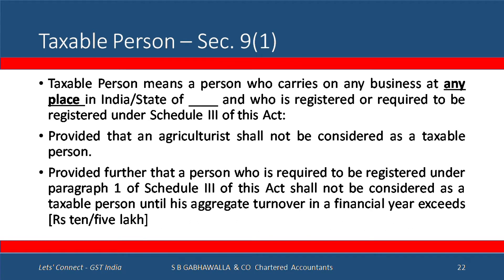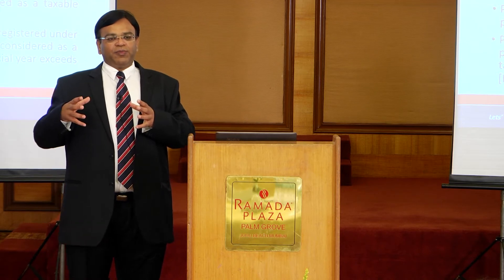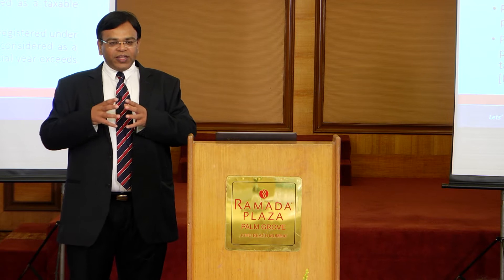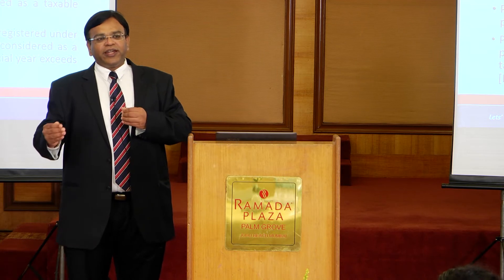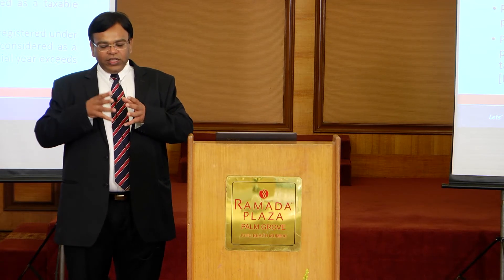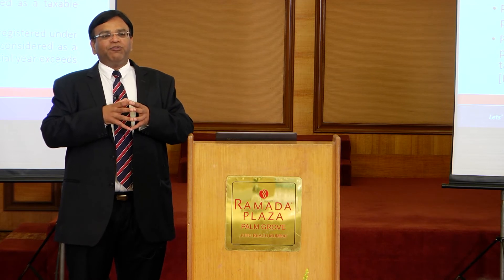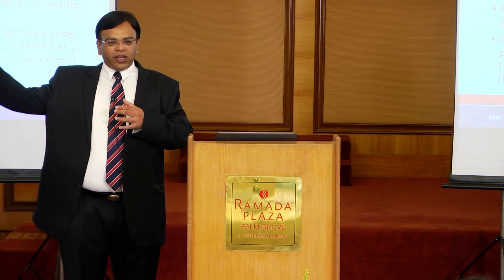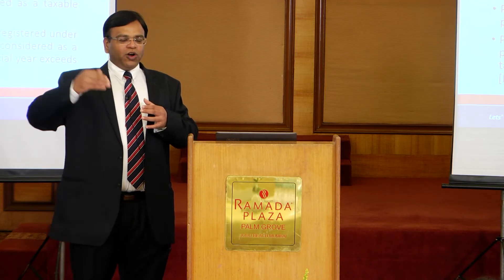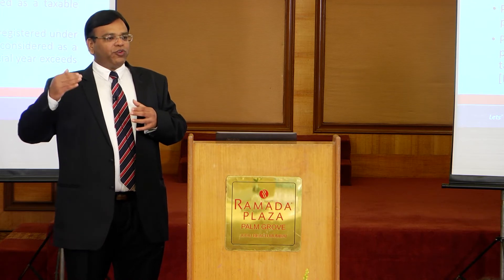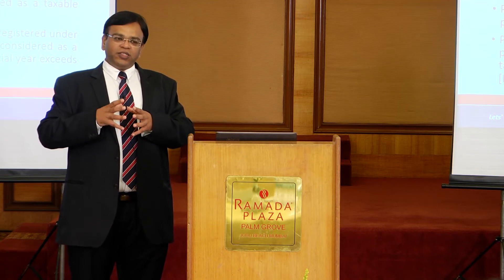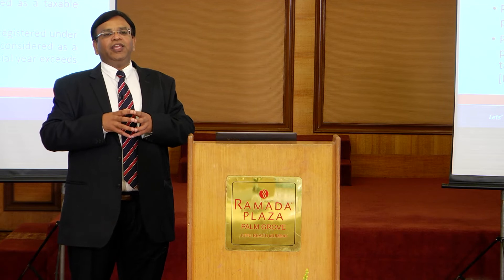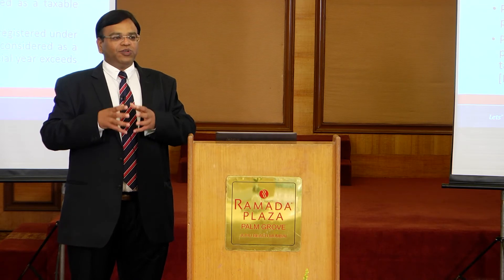Importantly, an agriculturist shall not be considered as a taxable person. They are not saying agricultural produce is exempted. This by itself has a challenge. As far as agricultural produce is concerned, the agriculturist will not directly sell you the goods — there will be a supply chain. Only the farmer, the first leg, is outside the purview of GST. Thereafter, when the goods reach the trader, the dealer, and the vegetable vendor, all of them are not agriculturists and therefore not out of GST. If they put certain agricultural produce in the zero rate, it's fine. If they don't put it in the zero rate, then essentially the exemption envisaged for agricultural produce vanishes to a large extent.